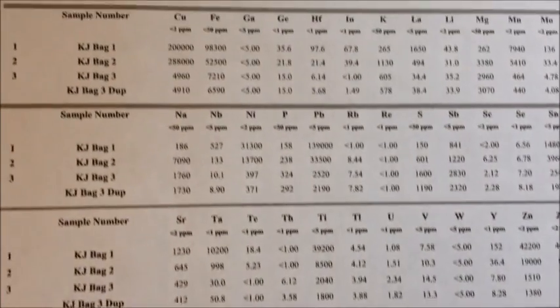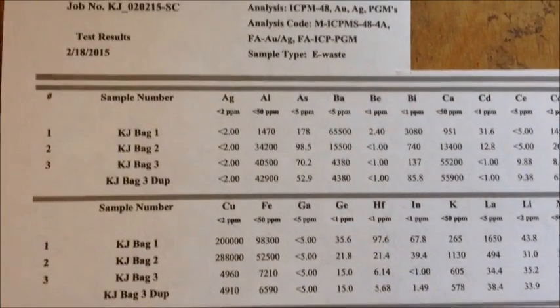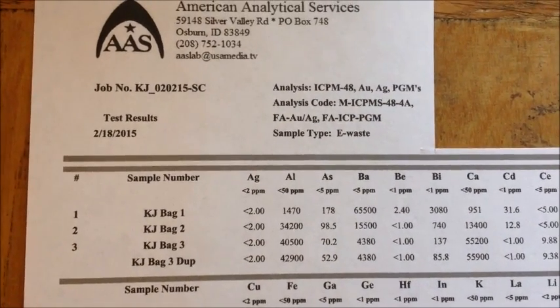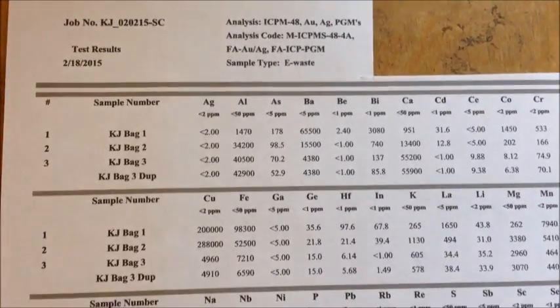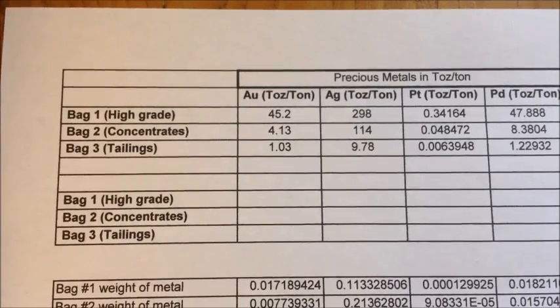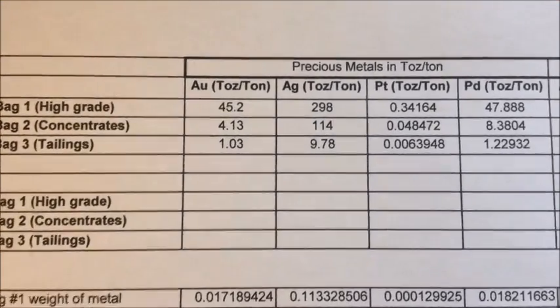And so I'll go over the percent recovery in the shaker table first, and then I'll review how I ended up converting ounces per ton and parts per million to percent recovery. I have picked out the metals that I was interested in.